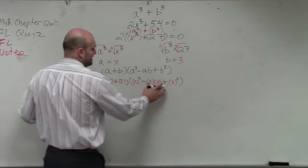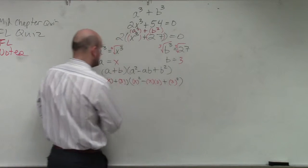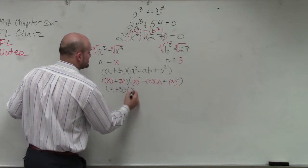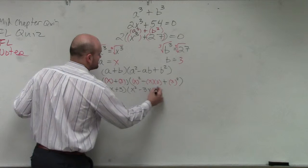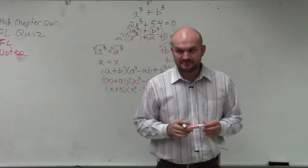So all you had to do for your homework was just simplify this. So x plus 3, that's supposed to be a 3, right? Okay, so the simplified form would have been x plus 3 times x² minus 3x plus 9. That's all you guys had to do for your homework.